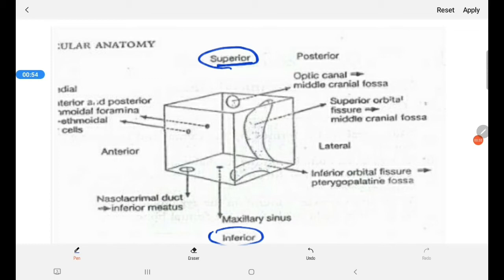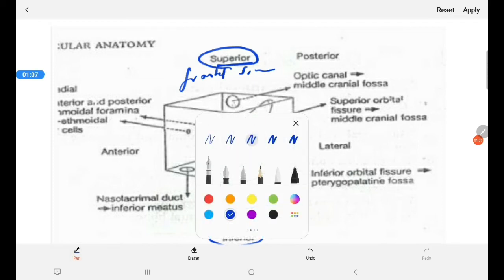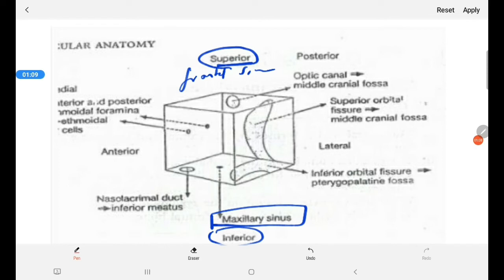Superiorly, we know it is the frontal sinus that comes on the top. Inferiorly, you know it is the maxillary sinus. Inferiorly, we also have the nasolacrimal ducts, inferior meatus.